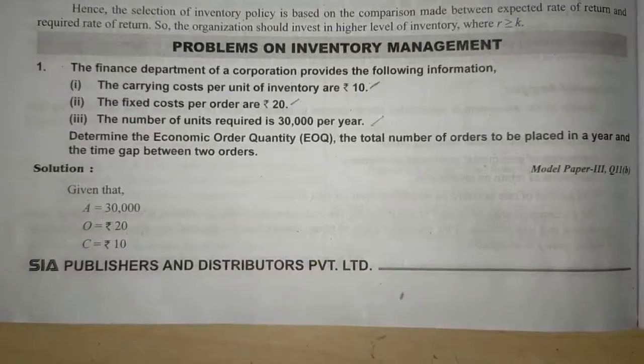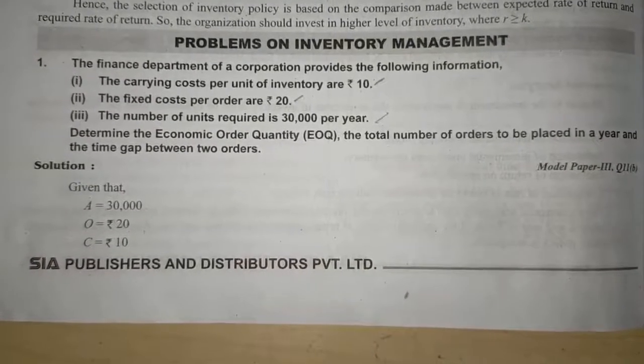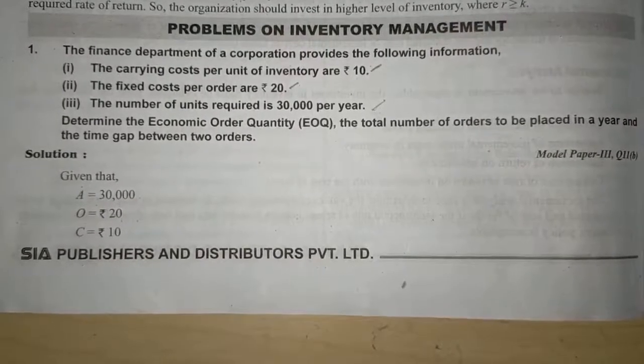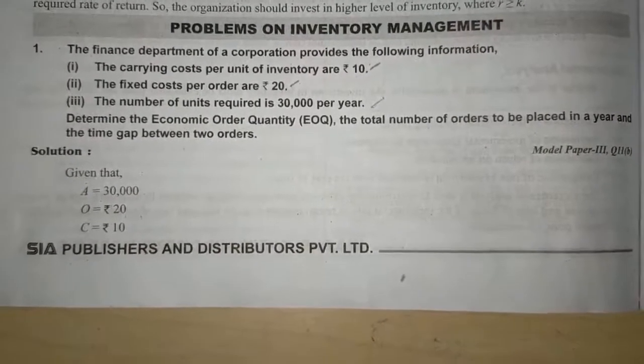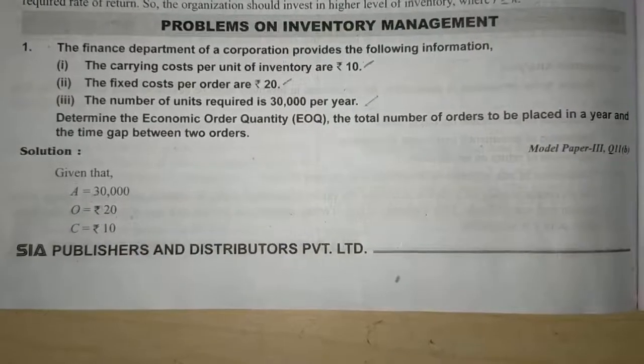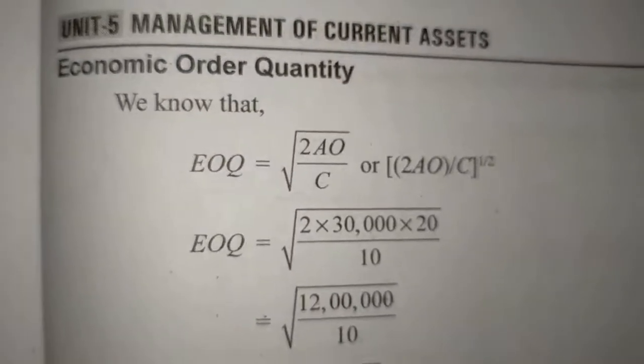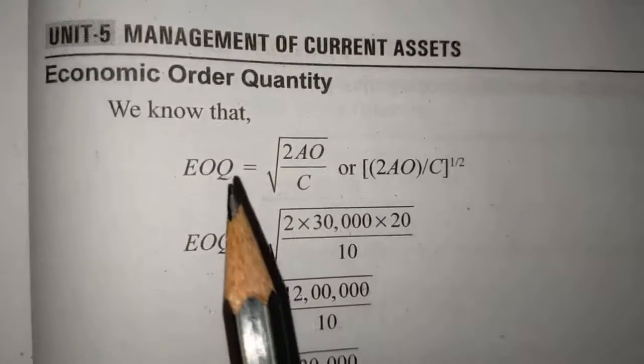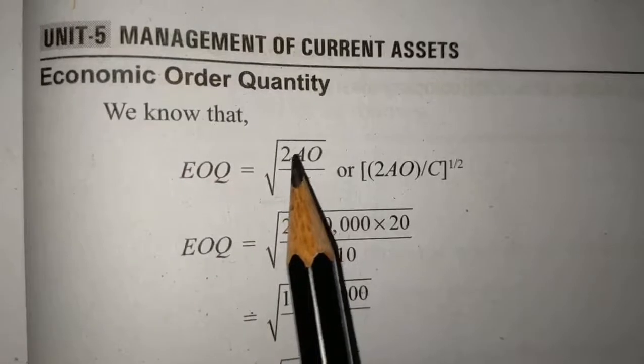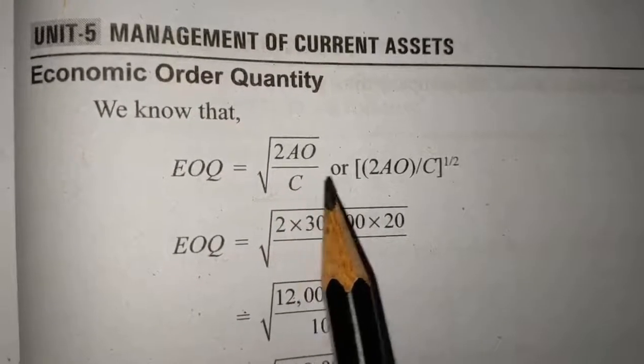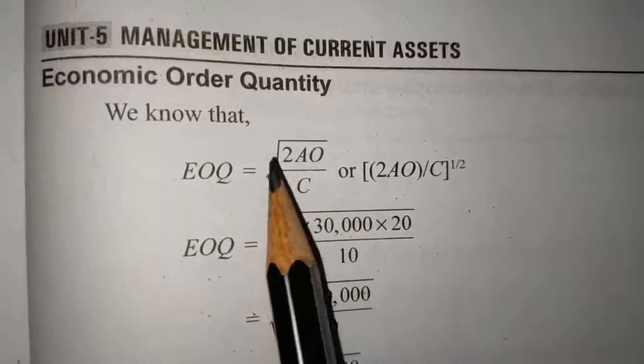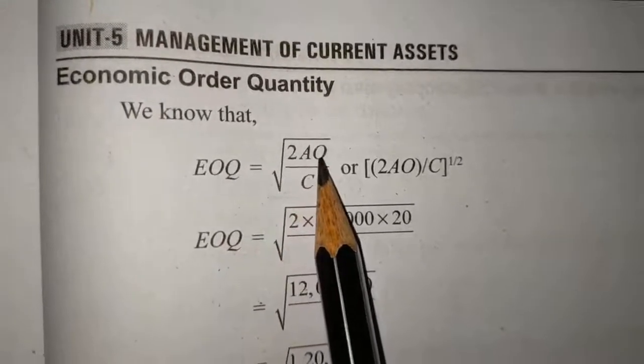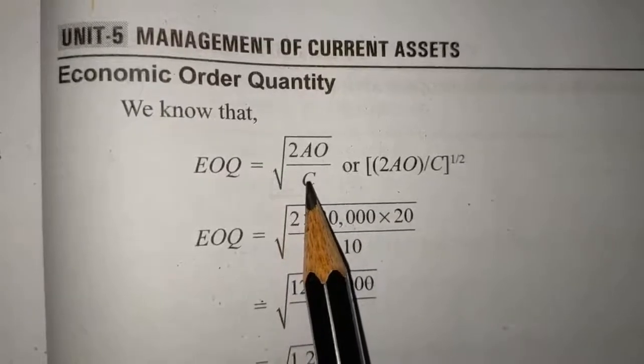To find out the inventory, we need to use the economic order quantity method, EOQ. I'll show you the formula and we will work through a problem. The formula for economic order quantity is: EOQ equals square root of 2AO divided by C. A stands for annual requirement, O stands for order cost, and C stands for carrying cost.